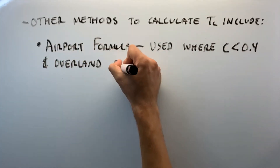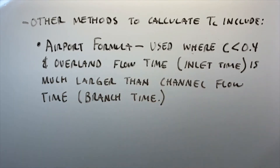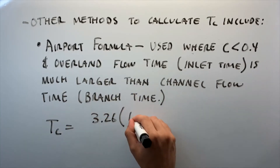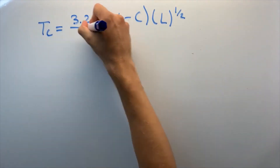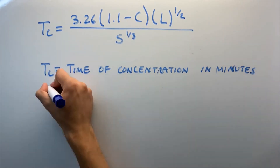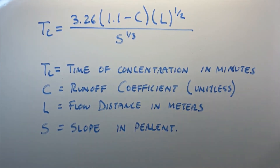The airport formula is used where C is less than 0.4 and overland flow time (or inlet time) is much larger than the channel flow time (or branch time). The formula is: Tc = 3.26 × (1.1 − C) × L^(1/2) / S^(1/3). Here, Tc is the time of concentration in minutes, C is the runoff coefficient (unitless), L is the flow distance in meters, and S is the slope in percent form.